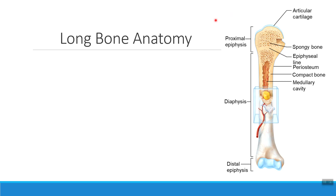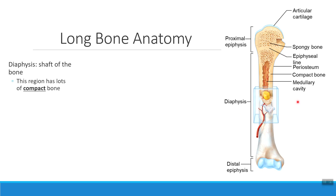Every time we look at a long bone, the first part we'll probably notice is this long internal portion called the diaphysis. The diaphysis is a fancy word for the shaft, or the long part of the bone. When we look inside the shaft of a long bone, notice how on the edges of the diaphysis we see a very thick bony layer on both sides. The diaphysis of the bone has a lot of compact bone tissue in it.